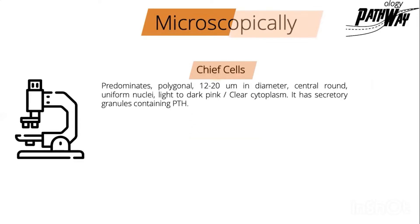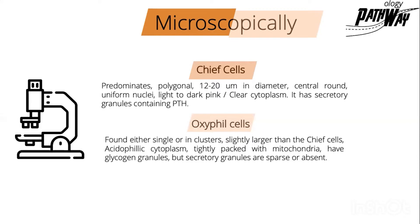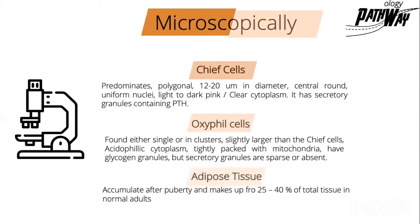Microscopically, we will have three types of cells. Number one, the chief cells, which are the predominant cell, with central rounded uniform nuclei and light to dark pink or clear cytoplasm. The chief cells are the main secretory cells for parathyroid hormone. Number two, the oxyphil cells, found single or in clusters, slightly larger than chief cells with acidophilic cytoplasm, tightly packed with mitochondria but not secreting parathyroid hormone. Number three, adipose tissue, forming 25 to 40% of normal parathyroid gland tissue.